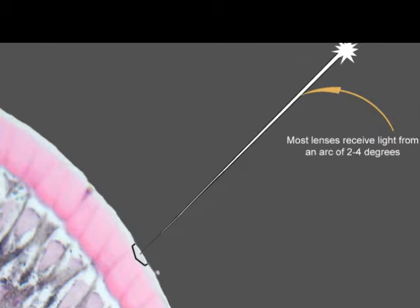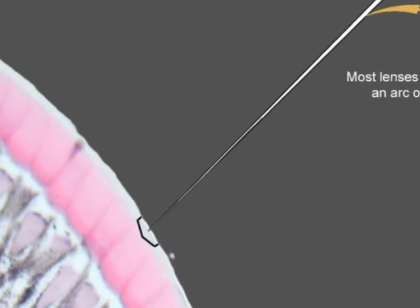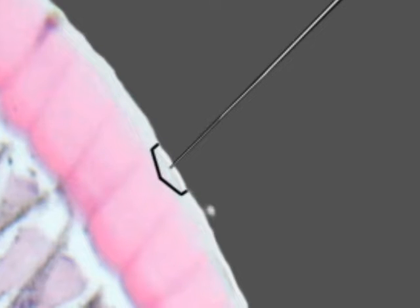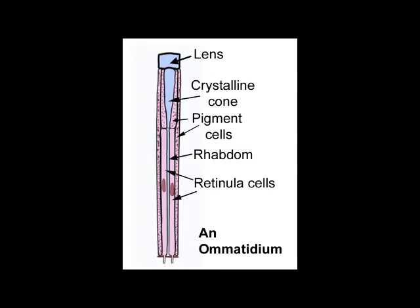Each of these thousands of lenses focuses light from a small arc down to the cells beneath. This diagram shows the arrangement of the cells beneath the lens. Each of these groups of cells is known as an ommatidium, and is responsible for one specific spot of light and colour.